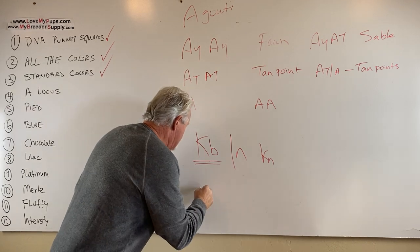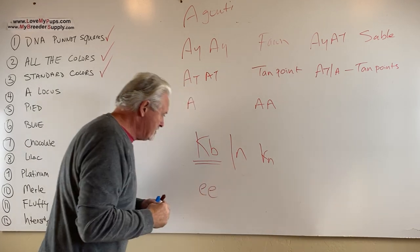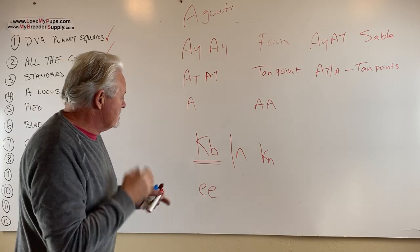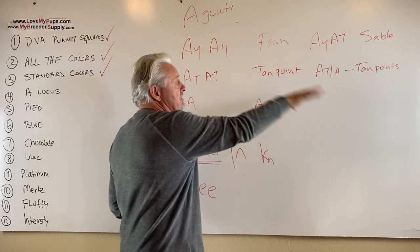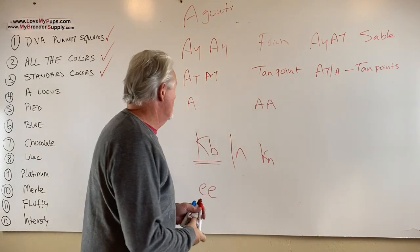Then another gene that can affect this is if you have a dog that's a cream dog. Cream dog is like white paint. It covers everything up. All of this stuff is masked. You don't see any of it at all. It's just a cream dog.